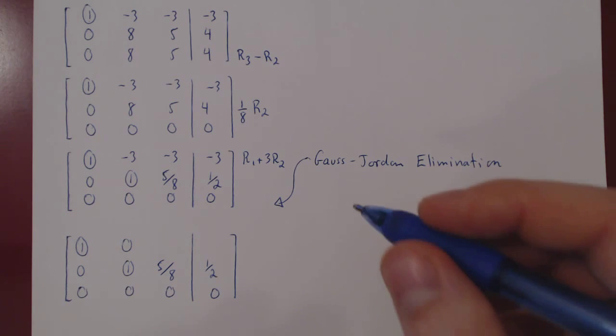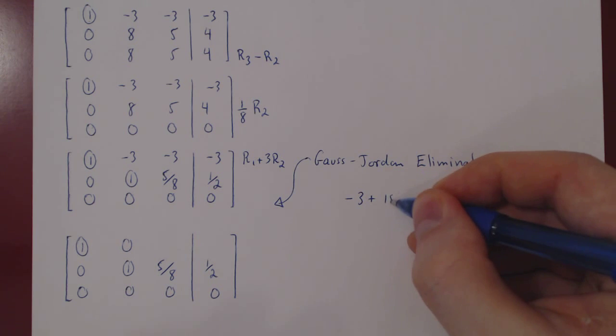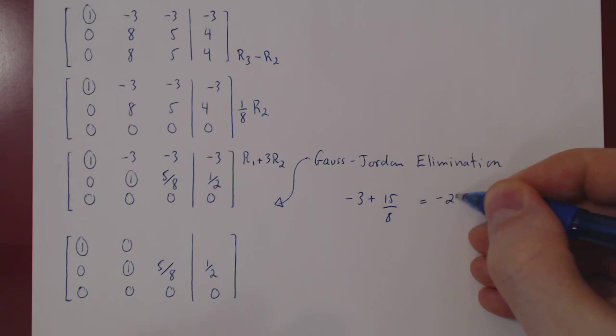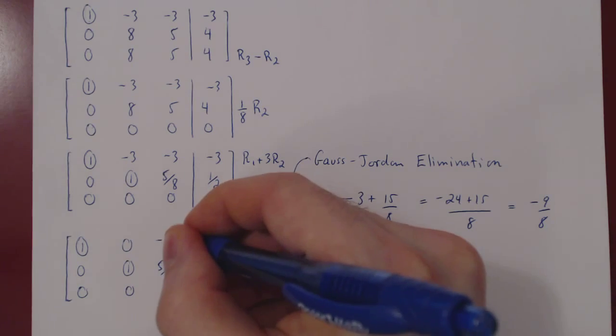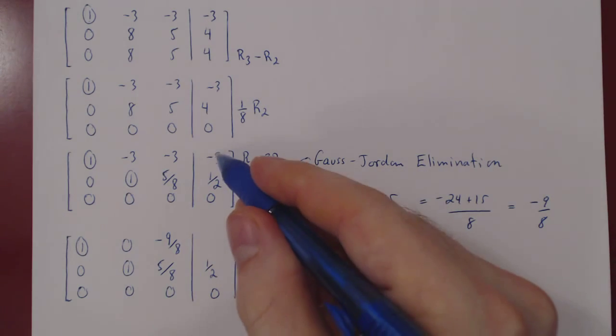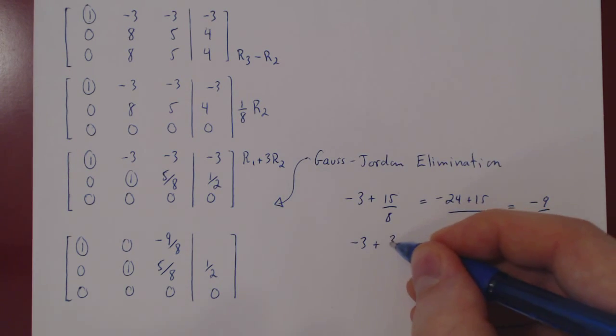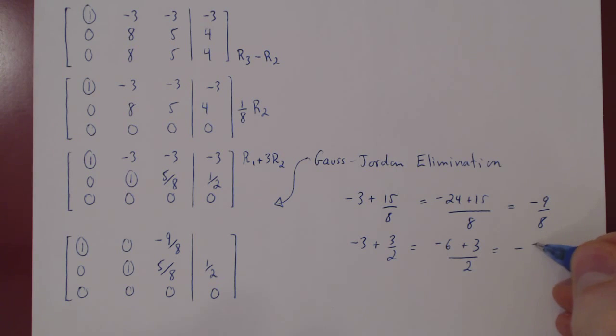Oh, sorry. I'll do it here. So we have negative 3 plus 15 over 8. I went backwards about this. So we get negative 24 plus 15 over 8, which is negative 9 over 8. So negative 9 over 8. And here, negative 3 plus 3 times 1 half, so plus 3 over 2, gives us negative 6 plus 3 over 2, which gives us negative 3 over 2.